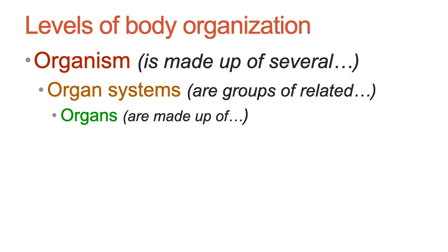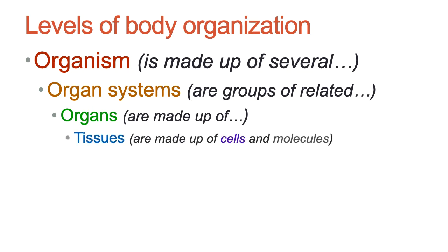For example, in the digestive system, you have several different organs working together to ultimately break down food and absorb nutrients from that food. Organs, of course, are made up of tissues, and tissues are made up of cells and molecules. Cells are the smallest living entity where there is life, so cells are the base living component of each tissue, and tissues are made up of different types of cells.